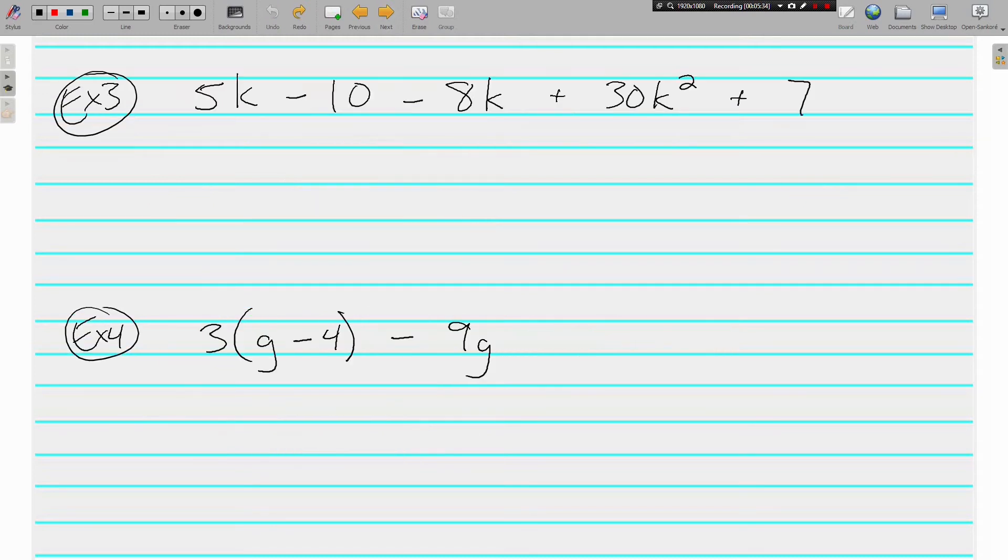A few more examples. A little more tricky. 5k minus 10 minus 8k plus 30k squared. Like terms, I have a positive 5k and looks like I have a negative 8k. I can't do the 30k squared because that has a squared. So 5 and a negative 8. Looks like the negatives are going to win by 3k.